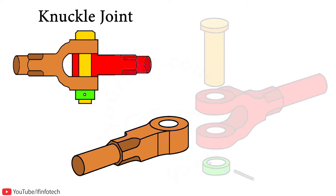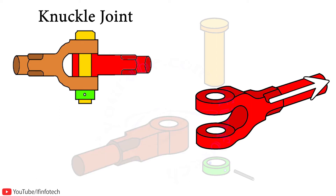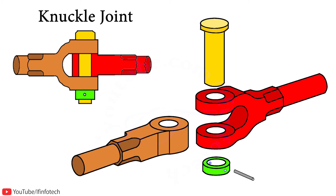On the single eye, we apply load P which acts towards the left. On the double eye, we apply load P which acts towards the right. This knuckle joint is designed only for static load, not for dynamic load.